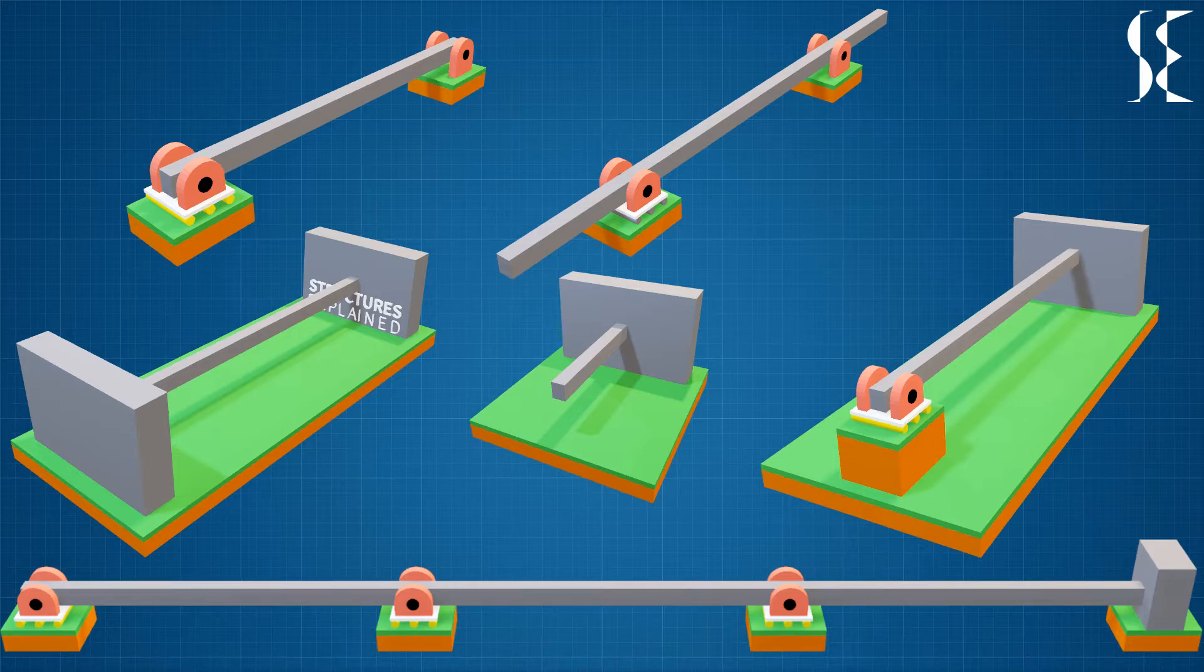Beams used for finding out reaction on support are assumed to be massless and supports, if pinned or roller, are frictionless. This is assumed for the sake of easy calculations.